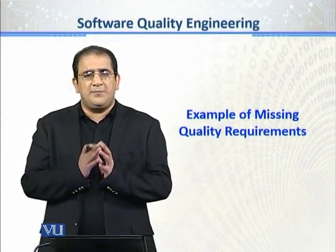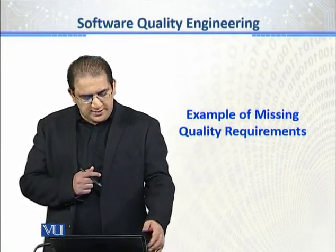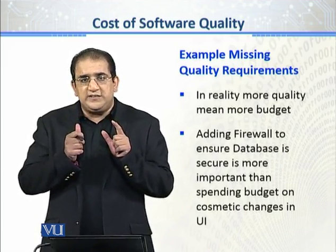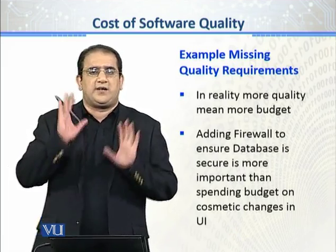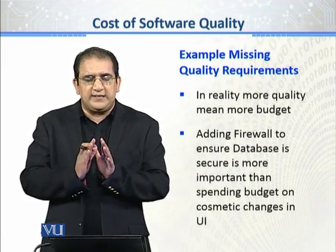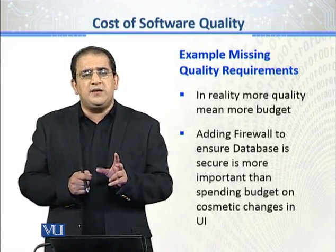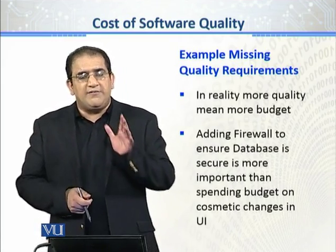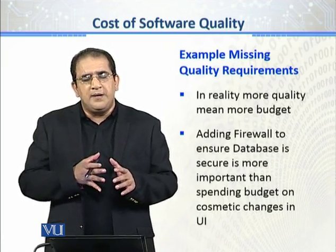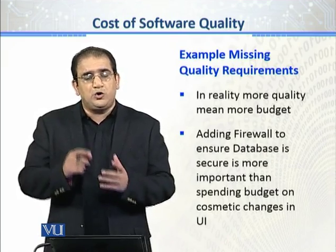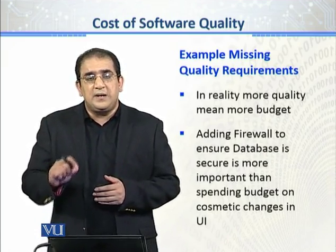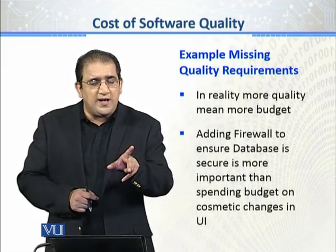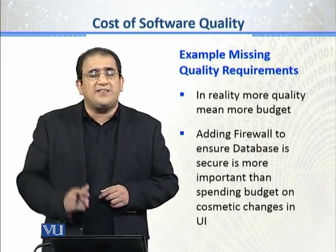Let us see some realistic examples of missing quality requirements. The example is a simple rule of thumb: quality is directly related to budget. If we want to ensure more quality in the software, we are talking about injecting more budget into it. Development cost is the minimum baseline, but the quality cost is the one that varies.